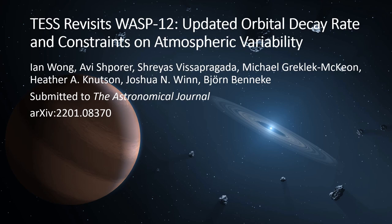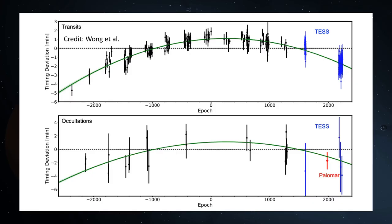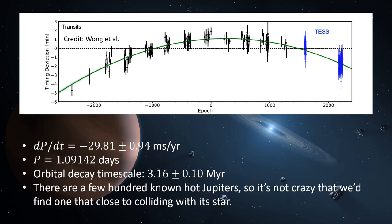Using the latest TESS data, this group plotted exactly when the transits of WASP-12b occurred relative to its average orbital period. With data across almost 5000 days — about 13 years — you can see the transits gradually occurring earlier over time because the orbital period is getting shorter and every orbit that difference adds up. They found the orbital period is decreasing by 29.81 milliseconds per year, meaning WASP-12b's orbit will decay in about 3 million years. That's a short timescale in cosmic terms, but since we know of a few hundred hot Jupiters, it's not crazy that we'd find one that close to colliding with its star.